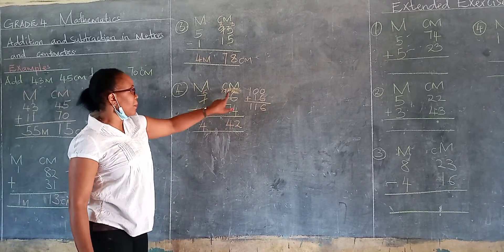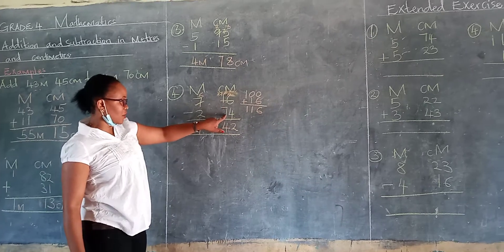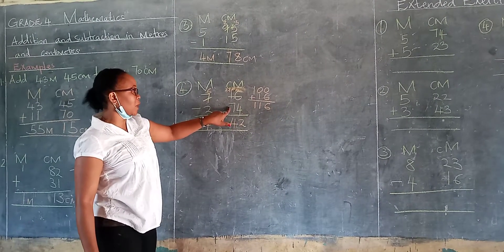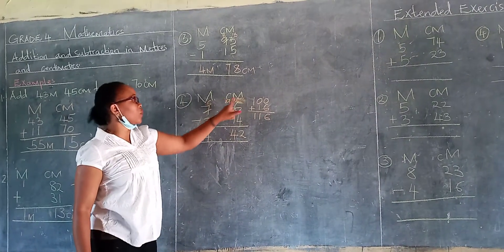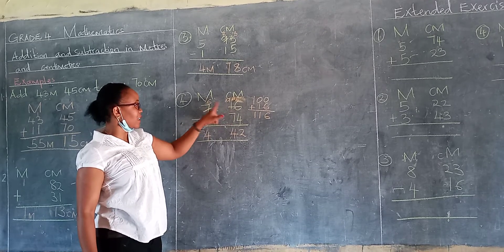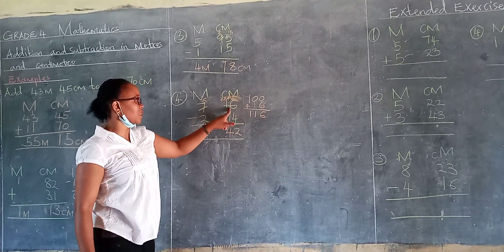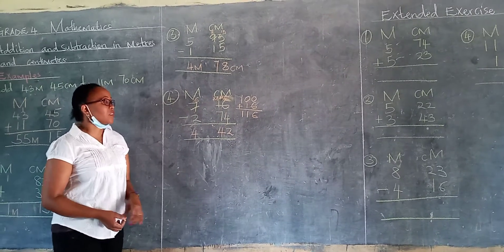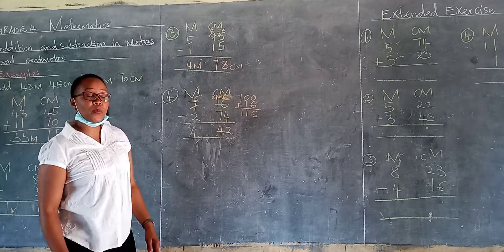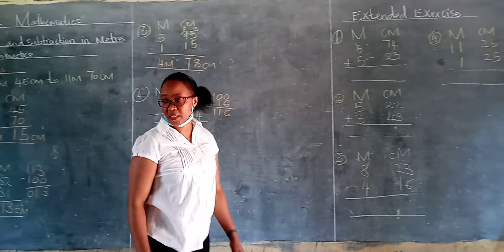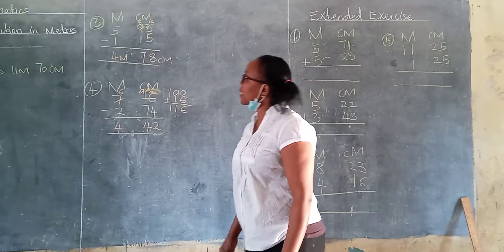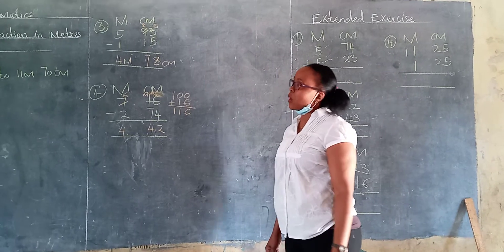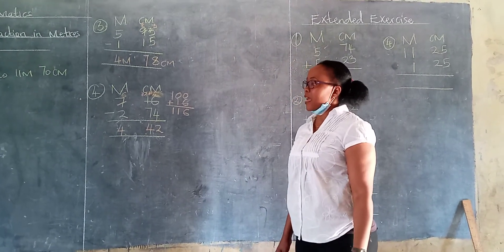I'm going to repeat again. If this number is smaller than the denominator or the number that is below, if you borrow, it's like you are borrowing 100 from the other side. So you have to plus the number that was here. Then you continue the way I have taught you how to subtract. So I hope you have understood how to subtract meters and centimeters and also how to add meters and centimeters.